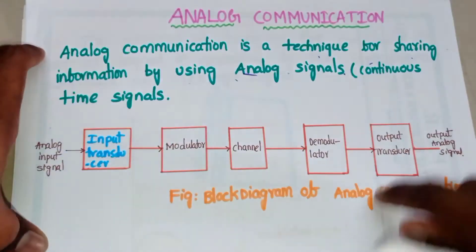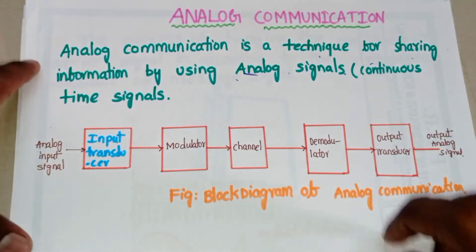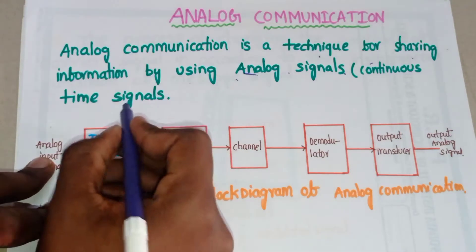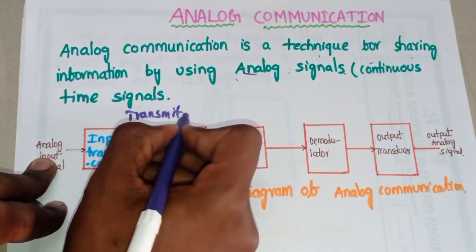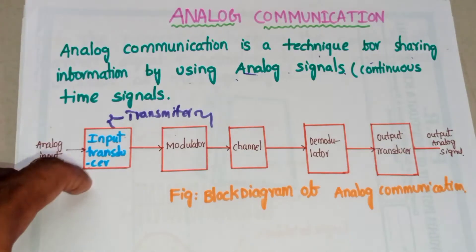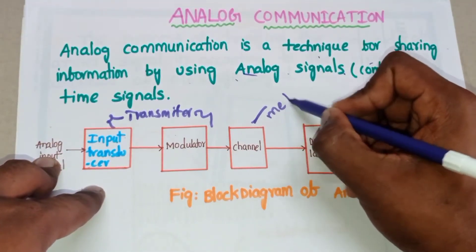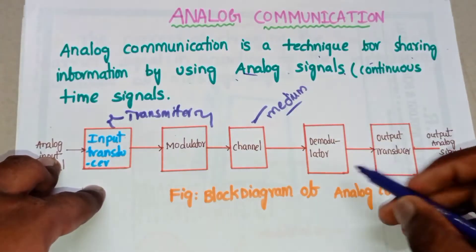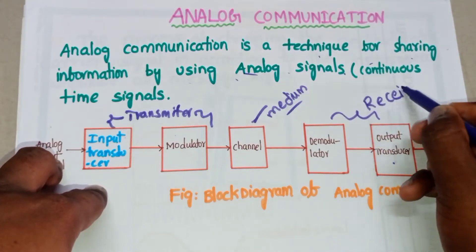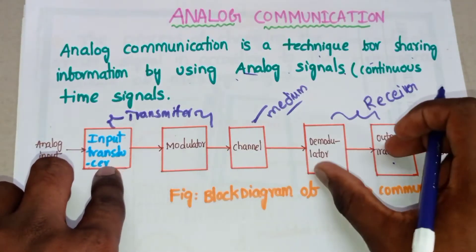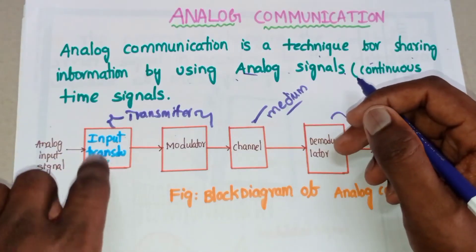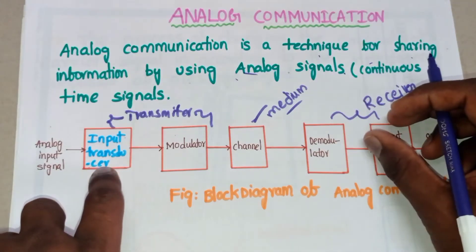The input of this block diagram is the input analog signal — this is the signal we need to transmit from the transmitter to the receiver. The transmitter part consists of the input transducer and modulator blocks. The channel is the medium in between. The demodulator and output transducer are the receiver parts. So we have a transmitter, a receiver, and a channel or medium in between.